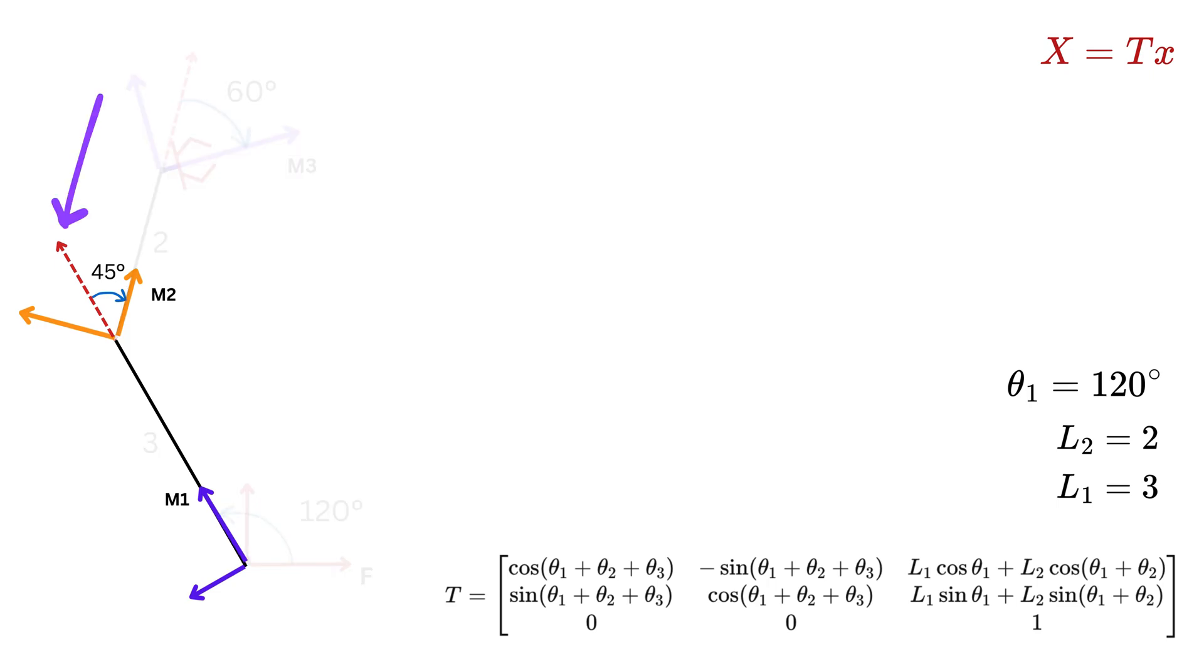Now for theta 2, we might think that angle between x-axis of M1 and M2 is 45 degrees. So theta 2 will be 45 degrees. But that is incorrect because we go from M1 to M2 in counterclockwise direction. But this 45 degrees is in clockwise direction. So theta 2 will be this angle and not 45, which will be 360 minus 45, or 315 degrees.